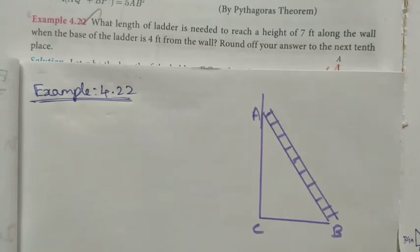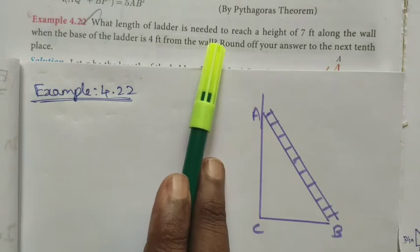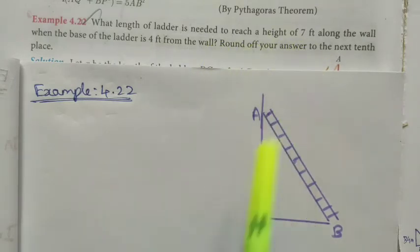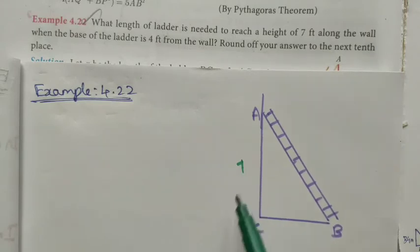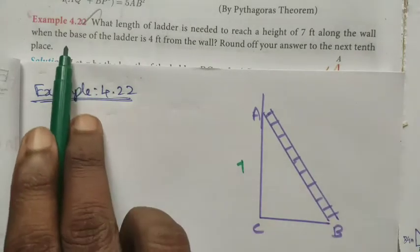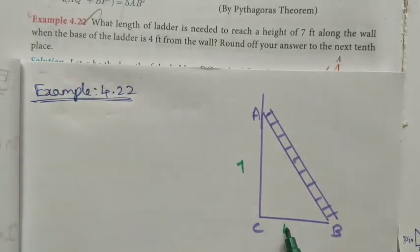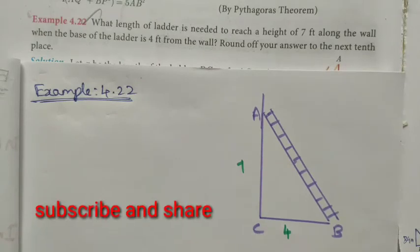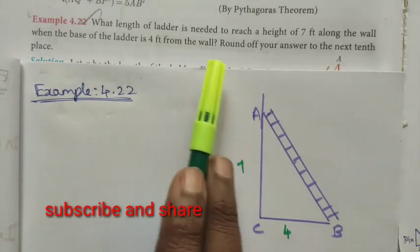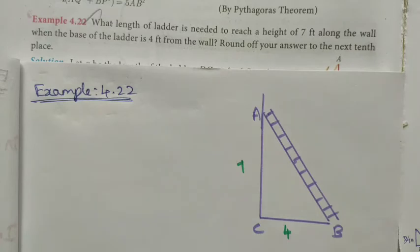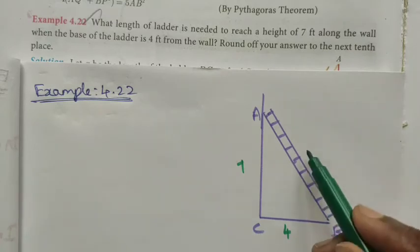Hi students, Class 10 Example 4.22: What length of ladder is needed to reach a height of 7 feet along the wall when the base of the ladder is 4 feet away from the wall? Round off your answer to the next tenth place.